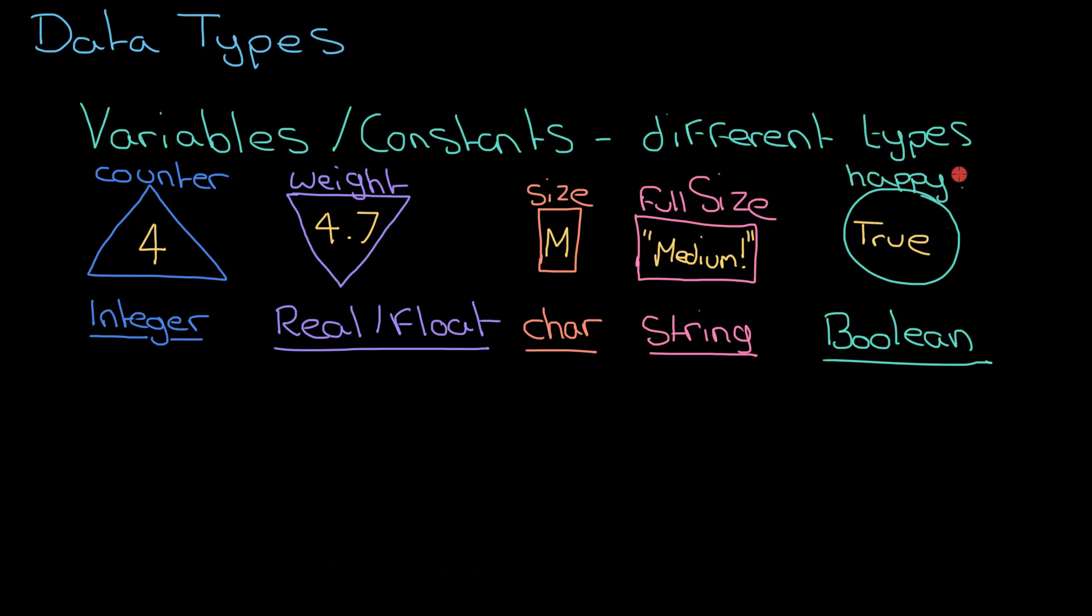So those are your five main data types: integers, reals, characters, strings, and booleans. What kind of data you need to store determines what kind of data type you need. Sometimes, though, you may need to convert from one data type to another, and that is a process called casting.